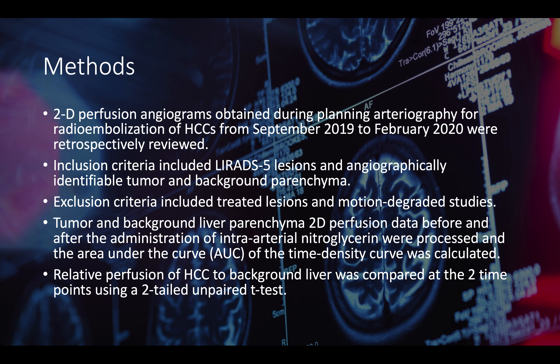This was a retrospective study. We looked at 2D perfusion angiograms obtained during MAA planning from September 2019 to February 2020. All lesions were LIRADS-5 with a readily identifiable tumor and background normal hepatic parenchyma. We excluded patients with previously treated lesions and motion-degraded studies. We calculated a ratio using the area under the curve of the time-intensity curves before and after intra-arterial nitroglycerin administration, comparing pre- and post-nitroglycerin ratios using a two-tailed unpaired T-test.